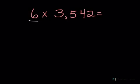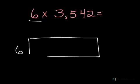So I have 6, so I'm going to put that on one side. And I'm going to draw my rectangle. And then I'm going to break apart 3,542 by place value. So I have 1, 2, 3, 4. So my box will have 4 sections.